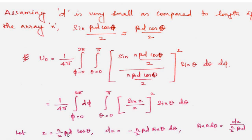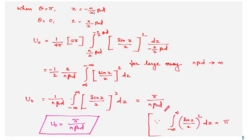With the substitution z = (n/2)βd cos θ, differentiating gives dz = −(n/2)βd sin θ dθ, so sin θ dθ = −dz / [(n/2)βd]. When θ = π, z = −(n/2)βd; when θ = 0, z = (n/2)βd. Substituting these limits, U_naught = (1/nβd) × integral from −∞ to +∞ of (sin z / z)² dz. Since the integral of (sin z / z)² from −∞ to +∞ equals π, we get U_naught = π / (nβd).